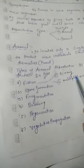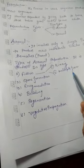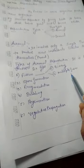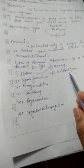Examples of binary fission include amoeba, paramecium, etc. Examples of multiple fission include plasmodium. Students, thank you very much.